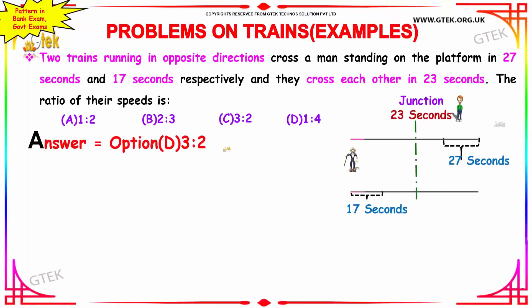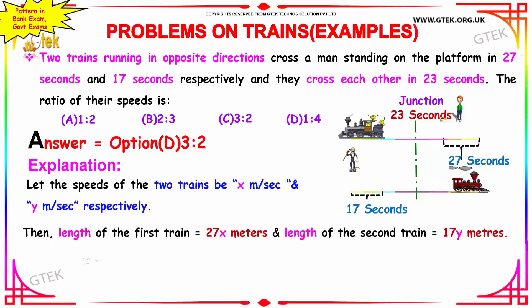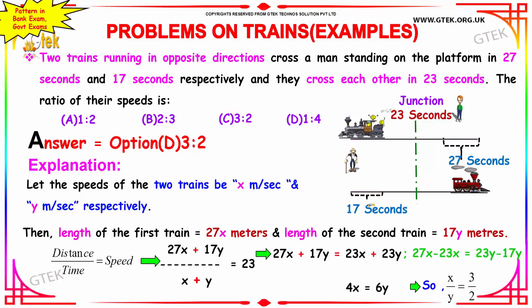Two trains are running in opposite direction, cross a man standing on the platform in 27 seconds and 17 seconds, and they cross each other in 23 seconds. The ratio of the speed is? We got time now, we need to identify the speed.